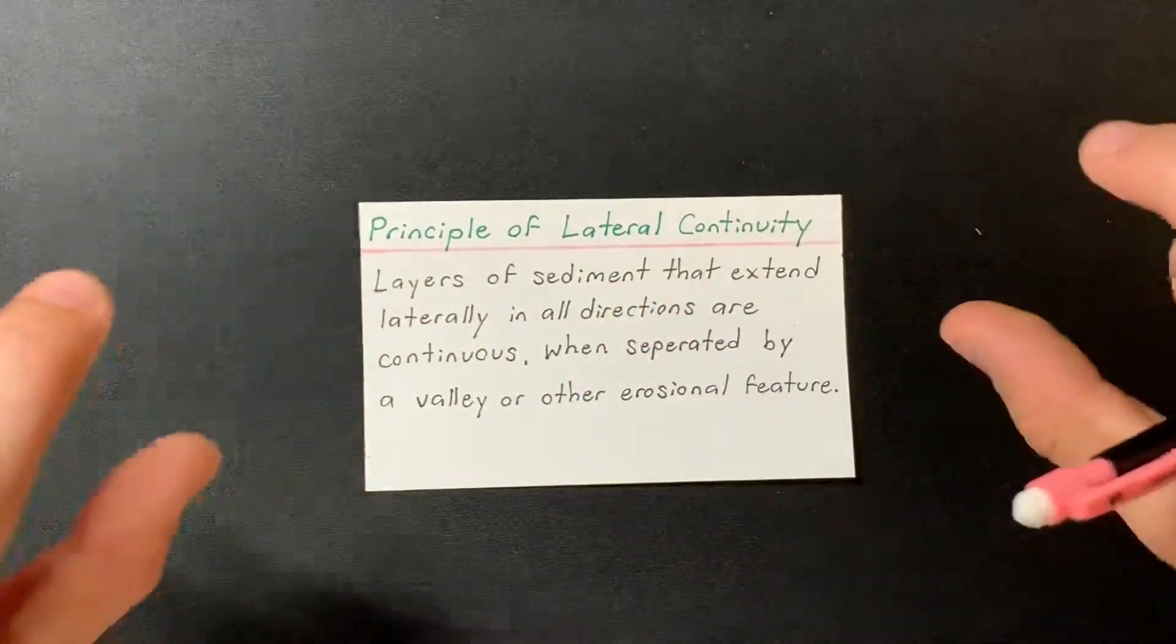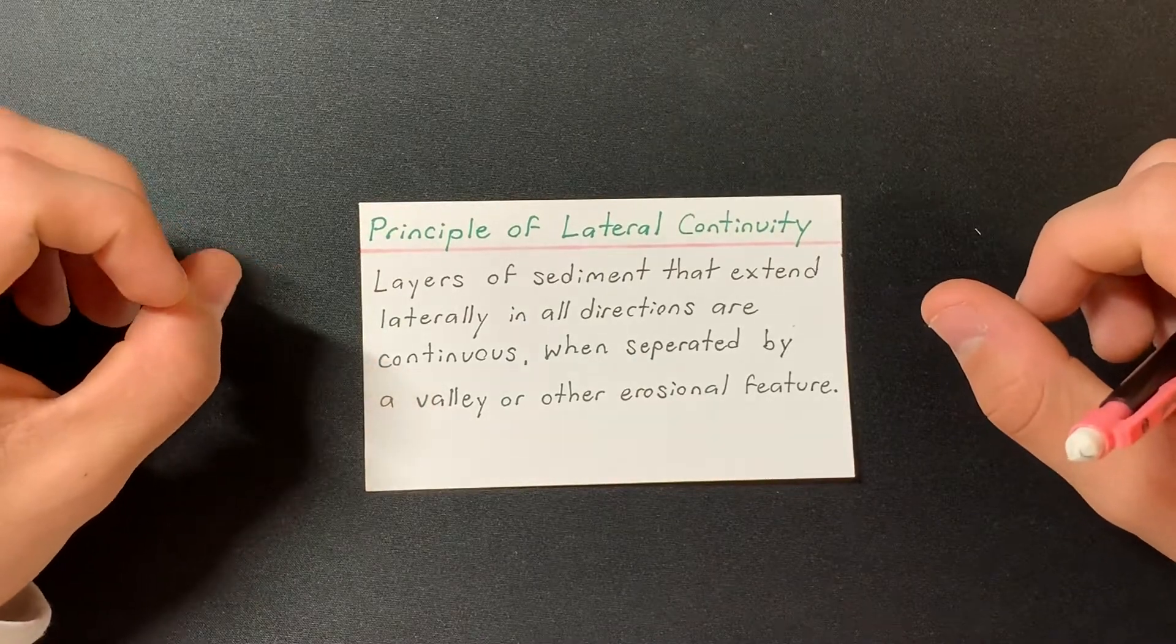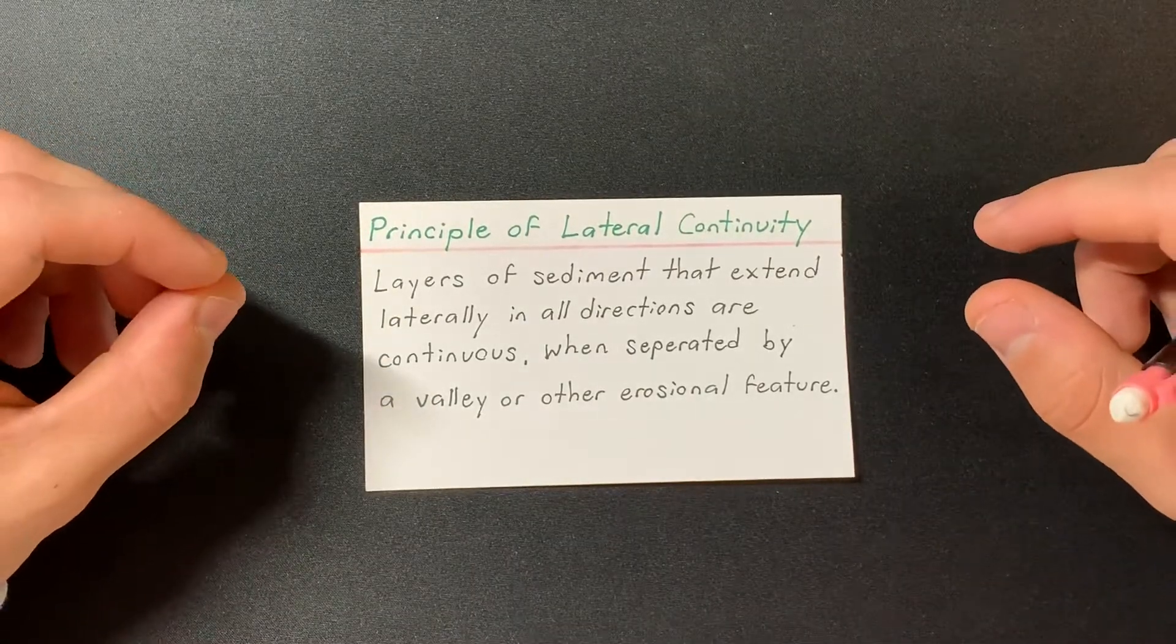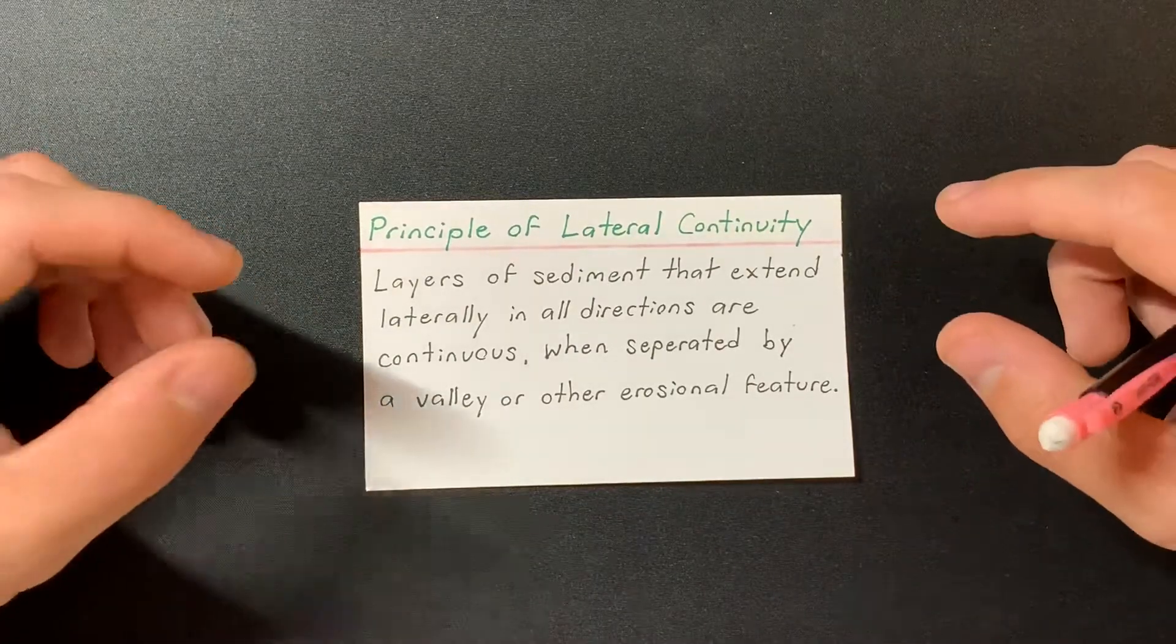it means that those rock layers were originally continuous, or it is safe to assume that they were continuous before that erosional process occurred.